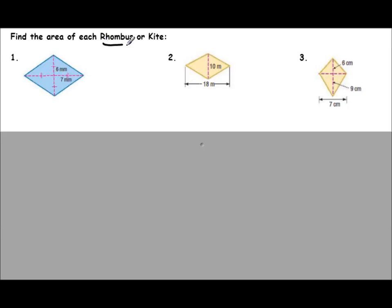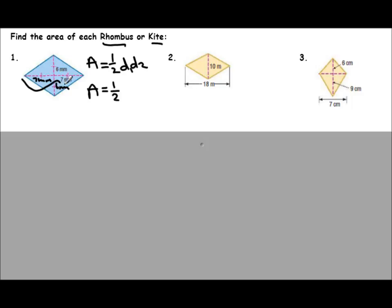Let's use our formulas. For a rhombus or kite, area equals 1/2 × diagonal 1 × diagonal 2. They only gave us 6 millimeters, so they only gave us half of a diagonal. But since the diagonals are bisected, this side is also 6 millimeters. They only gave us 7 millimeters of the other diagonal, so since it's bisected, that side is also 7 millimeters. So diagonal 1 has a total length of 14 and diagonal 2 has a total length of 12. Area equals 1/2 × 14 × 12, which is 84 millimeters squared.